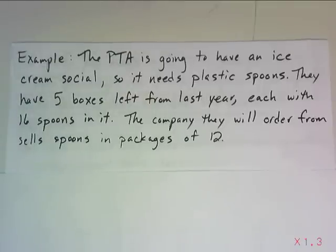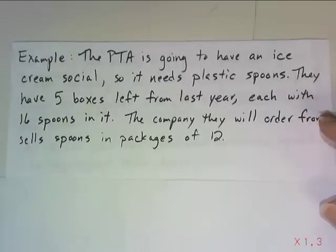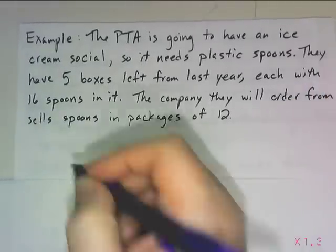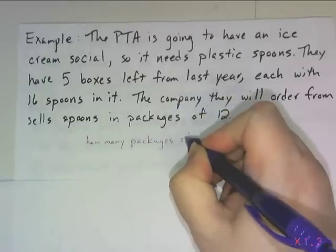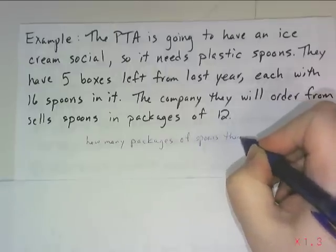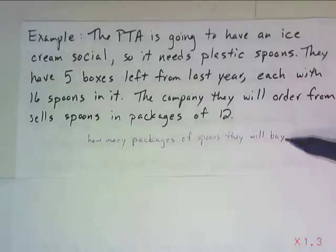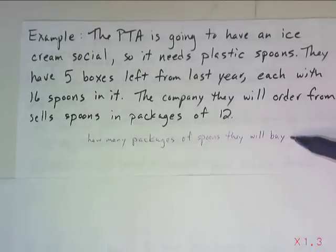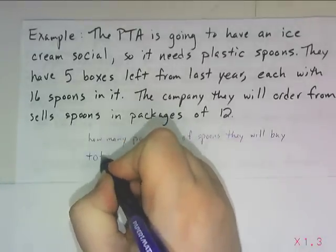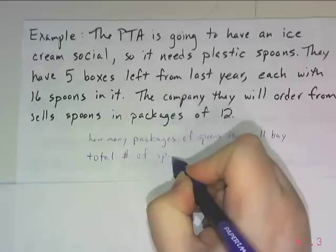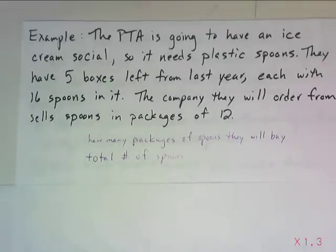The company they're going to order from sells spoons in packages of 12. Let's start by representing this scenario with an equation before I even show you what questions we want to answer from it. In order to write the equation, I need to define my variables. What are the unknown values here — the values that will be changing? One thing is how many packages of spoons they will buy. The other missing piece of information that will be changing is the total number of spoons.